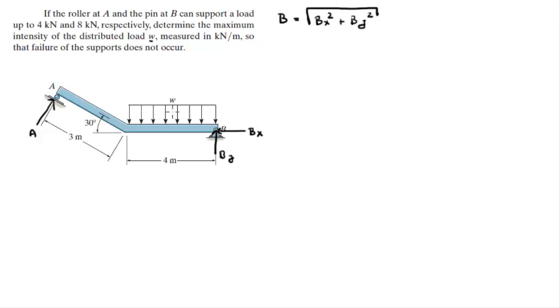So the first thing I'm going to do is I'm going to replace the distributed load with an equivalent force of F which occurs right in the center because it's a rectangular distributed load. Now F is equal to the length of the distributed load which is 4 times the height of the rectangle which is W measured in kN per meter.